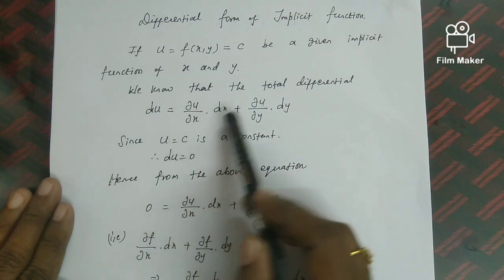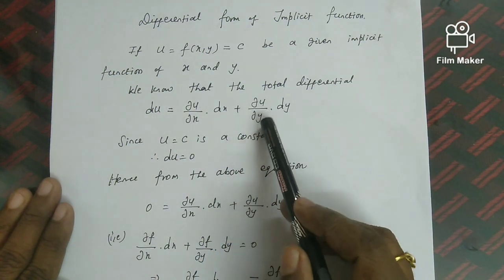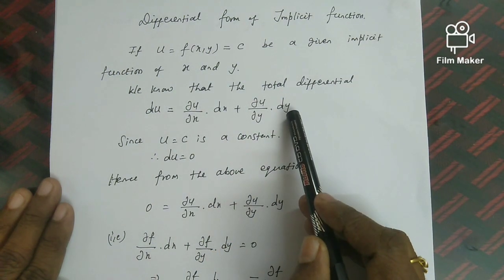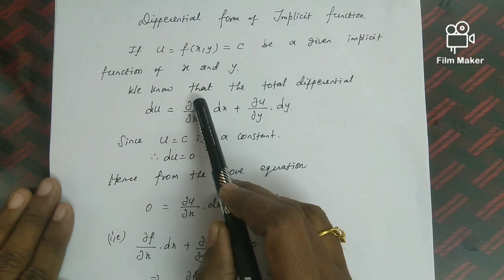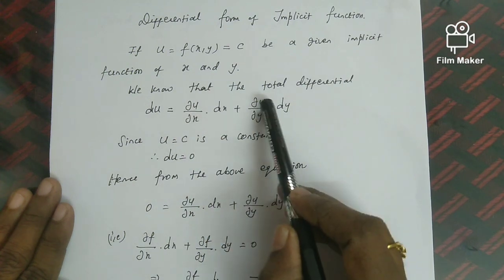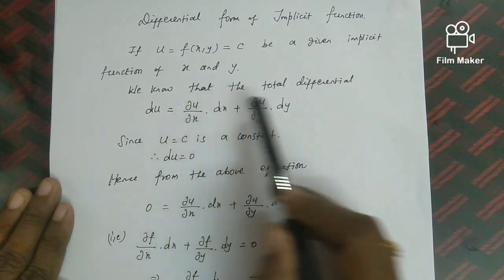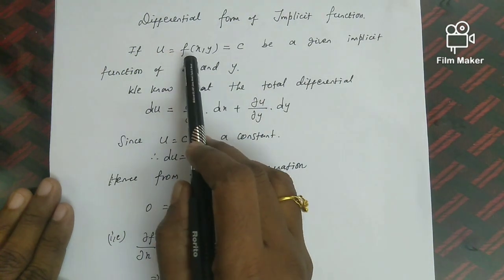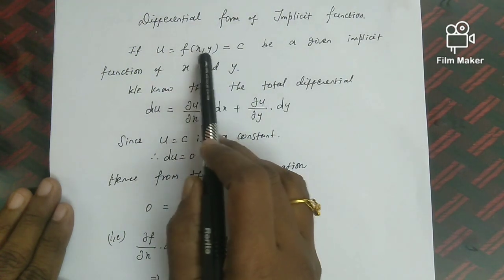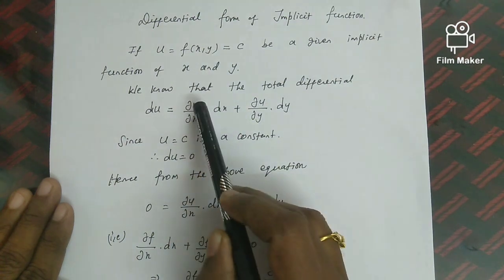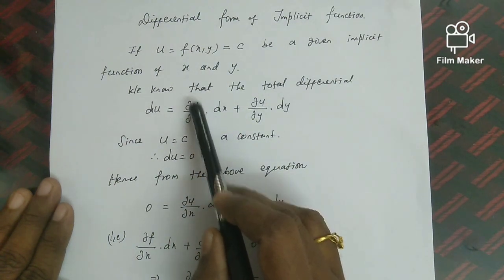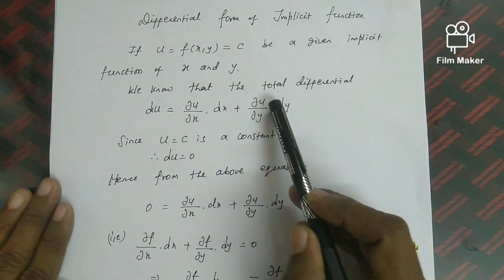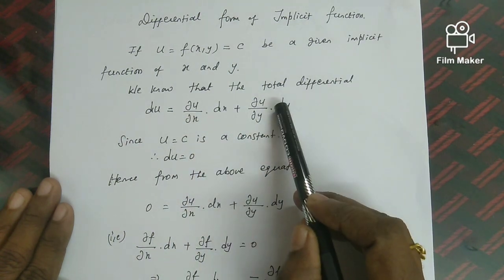If u is a function of x and y, the result uses ∂f/∂x and ∂f/∂y. Equivalently, ∂u/∂x and ∂u/∂y are correct.